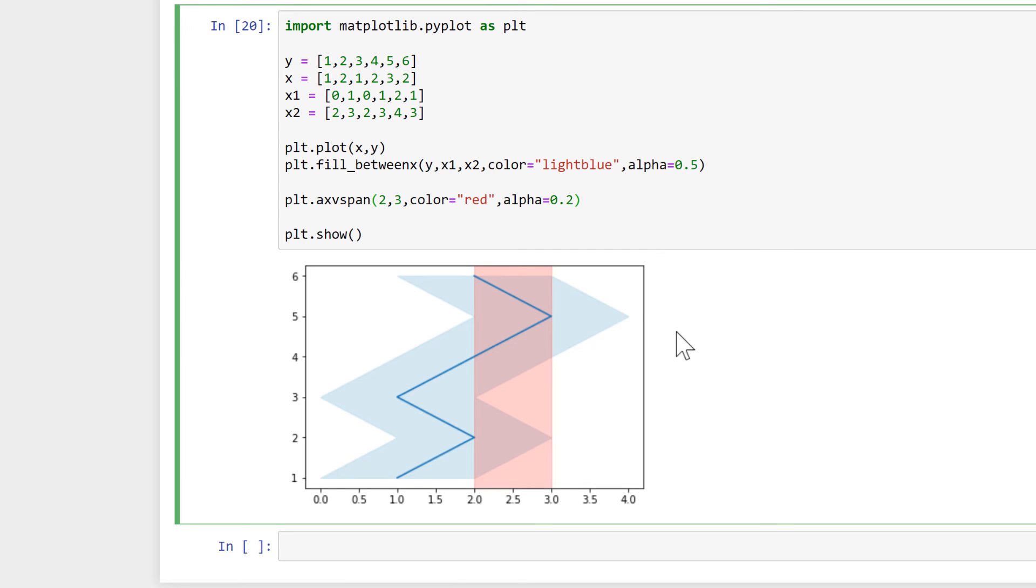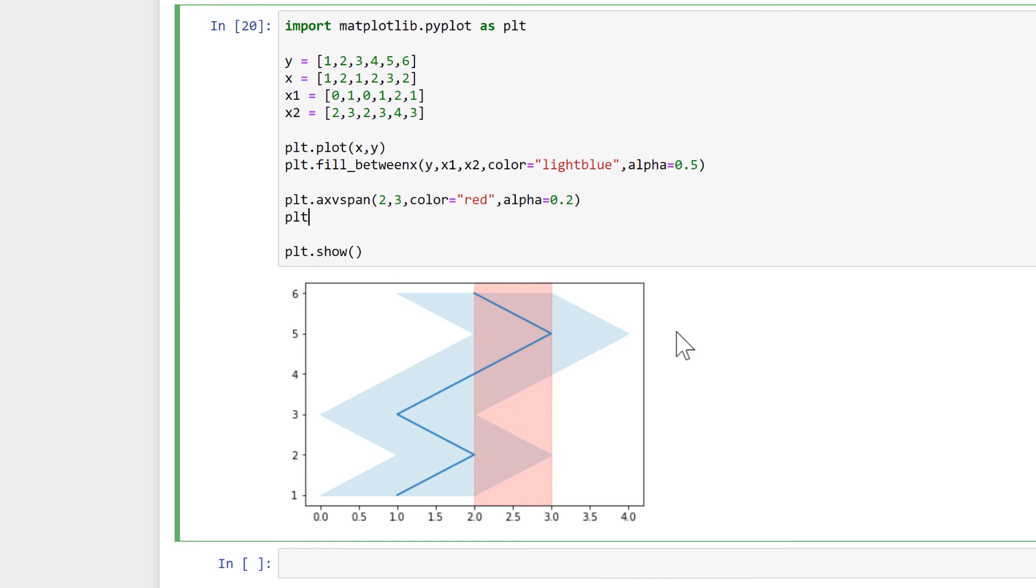Then if you want a horizontal bar, then you need to do plt.axhspan. And the H stands for horizontal. And this time we again need two numbers, but they will be the Y minimum and the Y maximum. So I'll put 3 and 5 in here and we will give this a color and we'll make it green and also make the alpha 0.2 again and run this. And we get a horizontal green bar going between 3 and 5 on the Y axis.